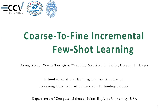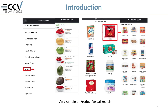Hello everyone. Today I'm going to talk about our work on coarse-to-fine incremental few-shot learning. Our motivation comes from the product visual search application. Product visual search is normally driven by a deep model pre-trained on a large-scale private image set, while at inference it needs to recognize consumer images at a finer granularity.